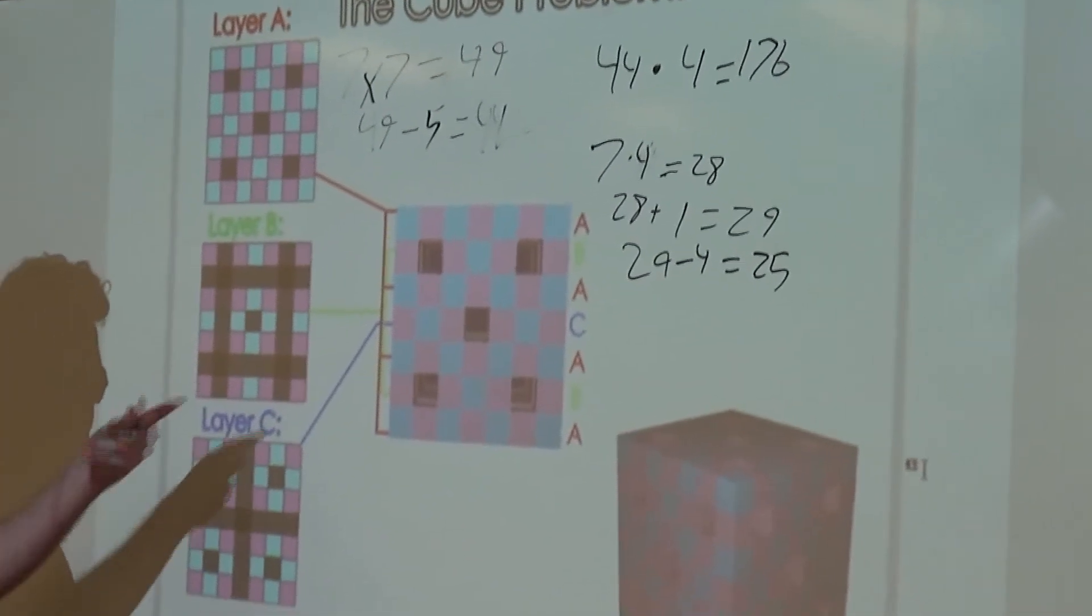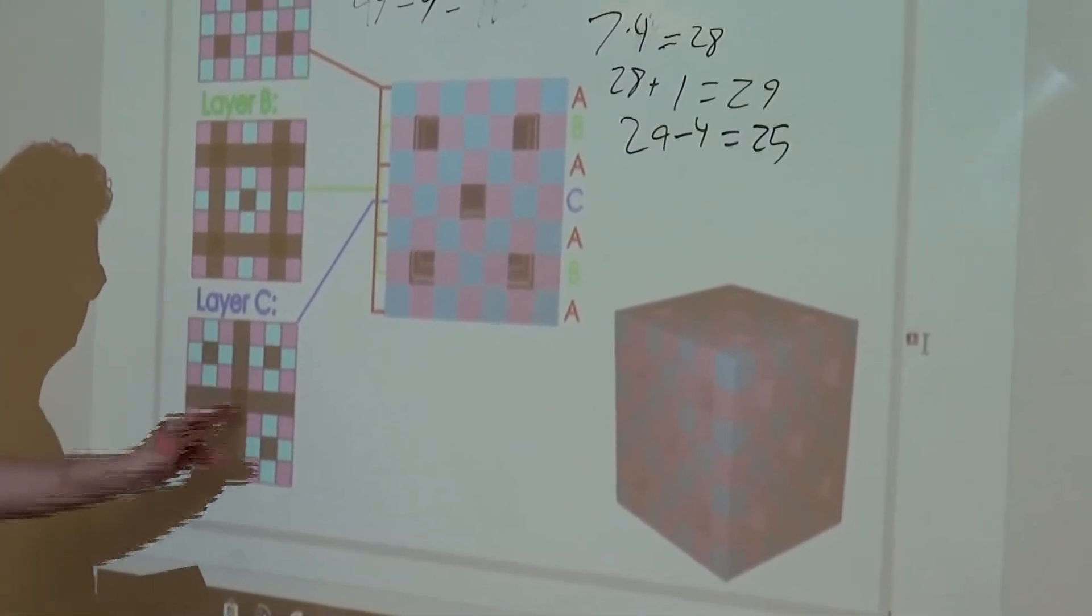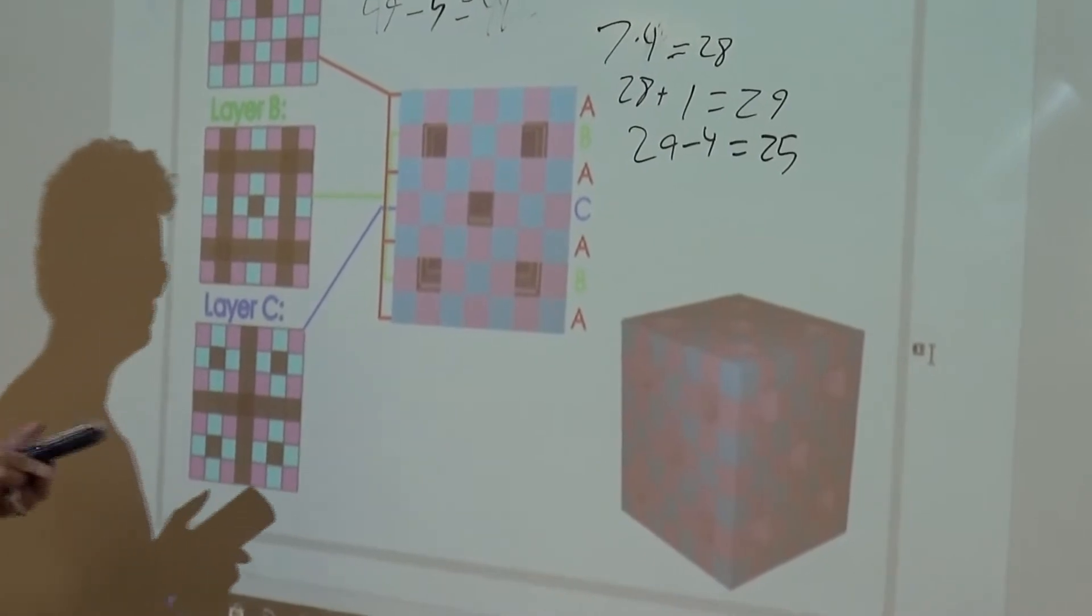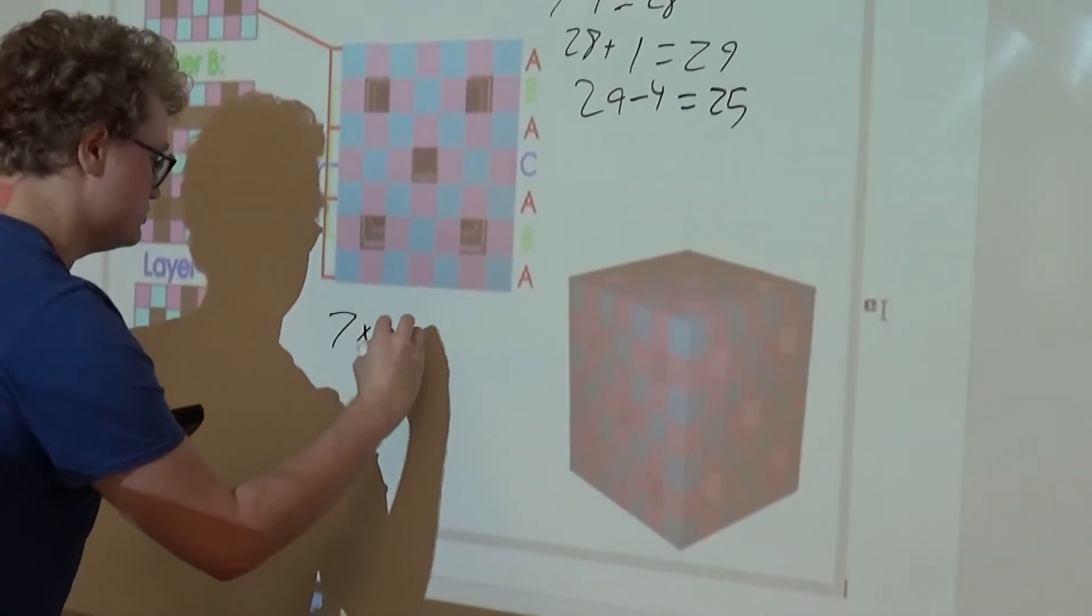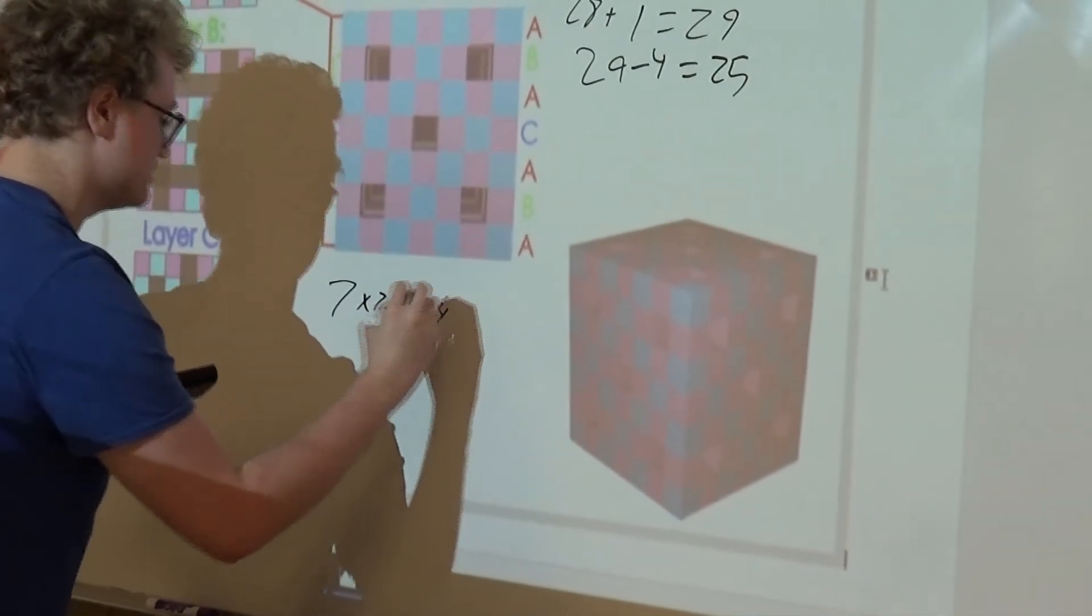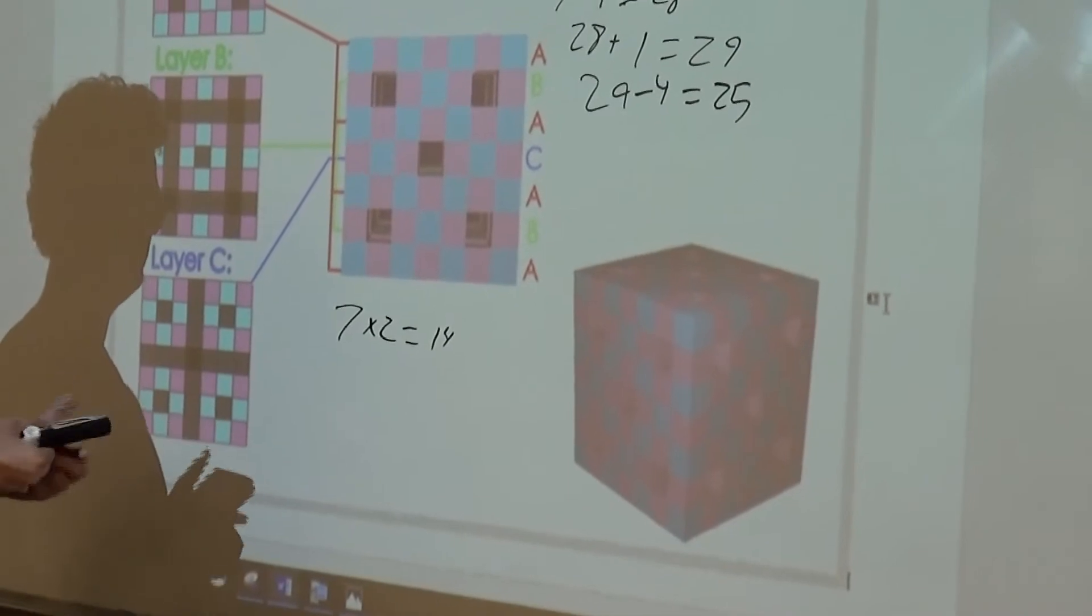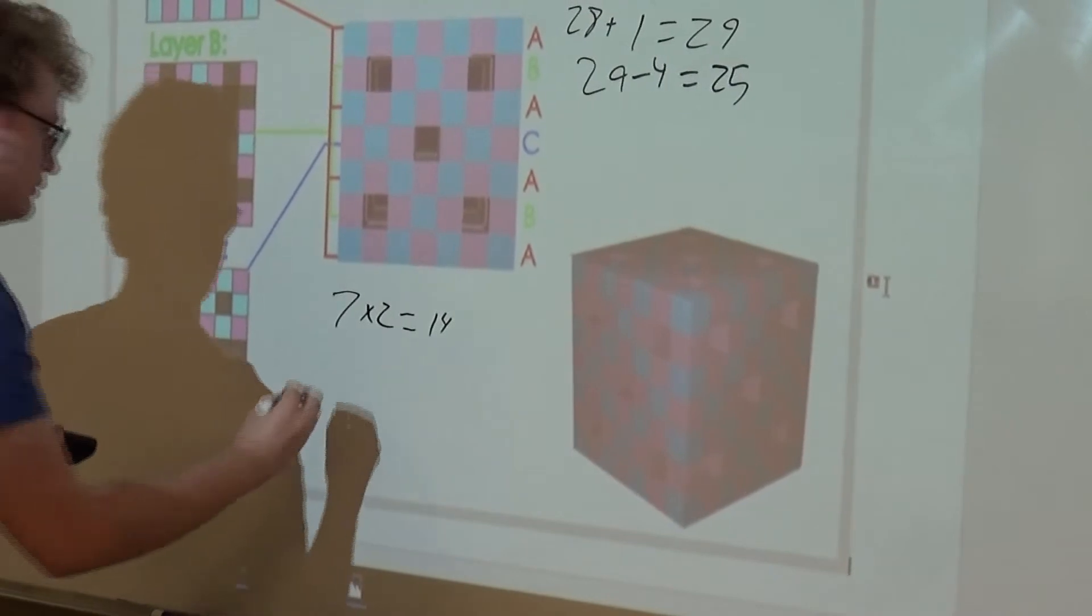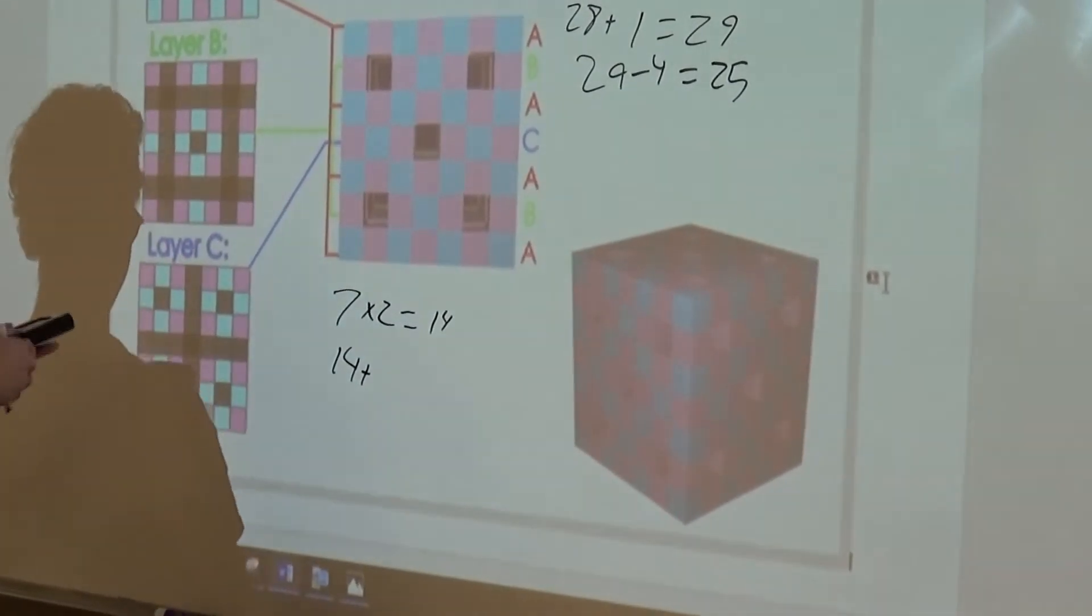Our last layer is the one in the middle. There's only two holes here that are equal to 7 times 2, which is 14. We have 4 more holes that intersect from the top, so that's just 14 plus 4.